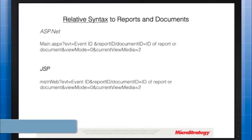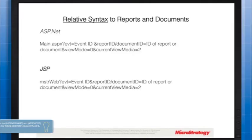These parameters are passed automatically to the next report or document with your user session information. With relative hyperlinks, you can link to reports or documents in the same or different project than the source document. When linking to the same project, you can remove the project and server parameters from the URL because they're passed automatically. You can also use the {&servername} and {&project} macros instead of manually typing parameter values.